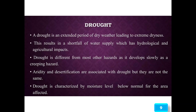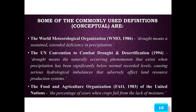A drought is an extended period of dry weather leading to extreme dryness, resulting in a shortfall of water supply which has hydrological and agricultural impacts. Drought is different from most other hazards as it develops slowly, acting as a creeping hazard. Aridity and desertification are associated with drought but are not the same. Drought is characterized by moisture levels below normal for the affected area.